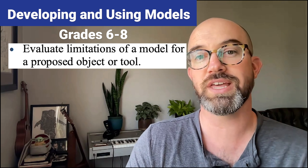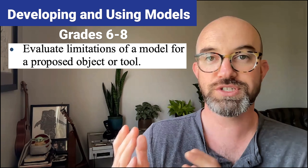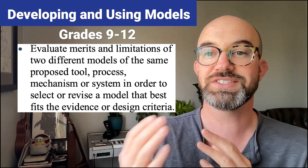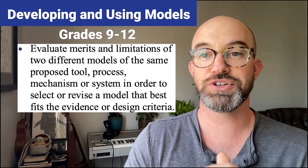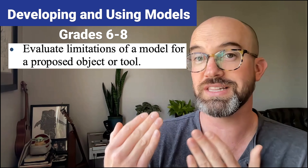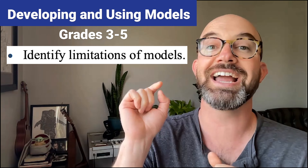The best way to see how these work is to dive into specific examples of SEPs, DCIs, and crosscutting concepts. Let's look at developing models. In K-2, students just need to understand that there's a model and a process and that they're different. In 3-5, they need to identify limitations of models. At 6-8, they need to evaluate limitations of a model for a proposed object or tool. And in 9-12, they have to evaluate the merits and limitations of two different models of the same tool, process, or mechanism in order to decide which best fits the evidence or design criteria. So if high school students are struggling with comparing two model types, walk back to 6-8; if they struggle with evaluating limitations, walk back to 3-5.